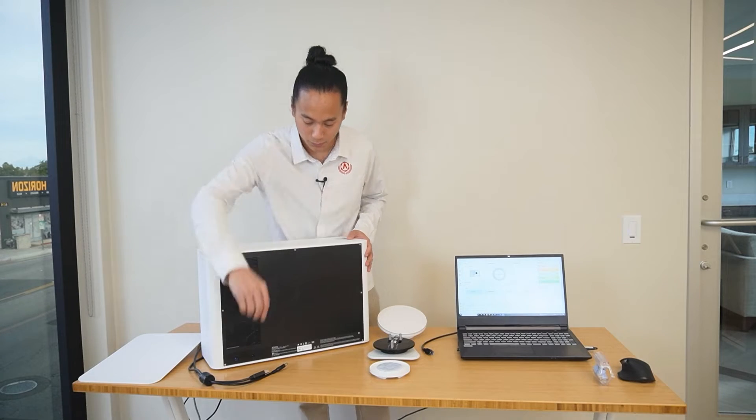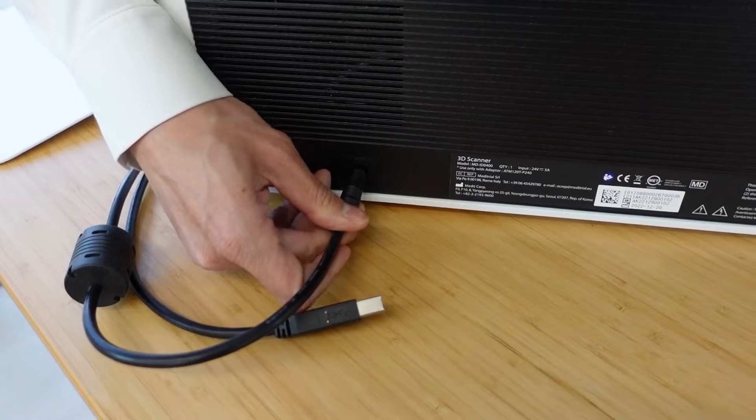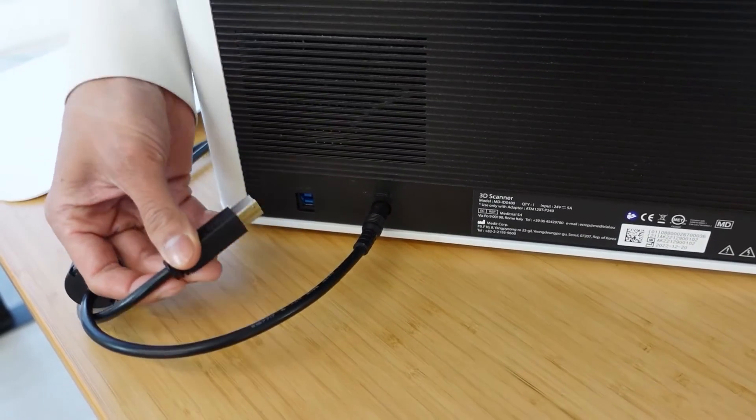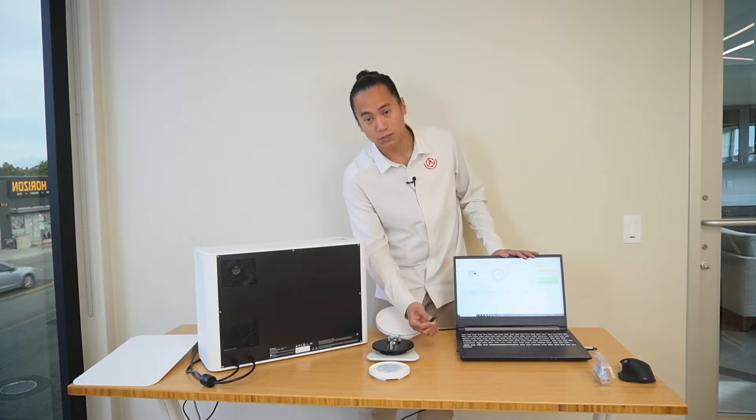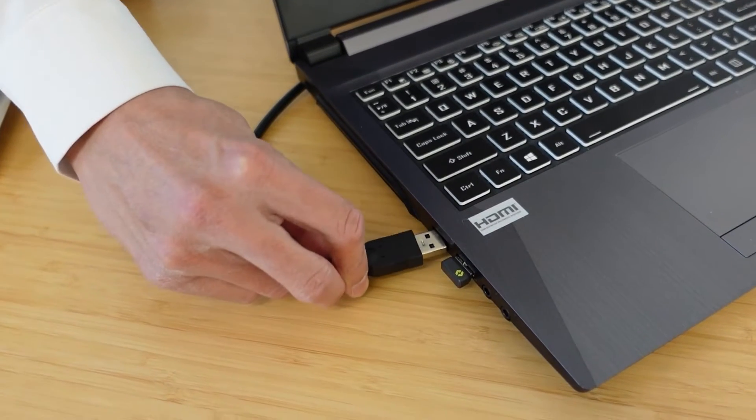We have two cables. We have your power cable that gets plugged in, and then we have your camera connection cable. Now, it's important when you're connecting your scanner to the computer that the camera connection cable gets plugged into a USB 3.0 or super speed port.